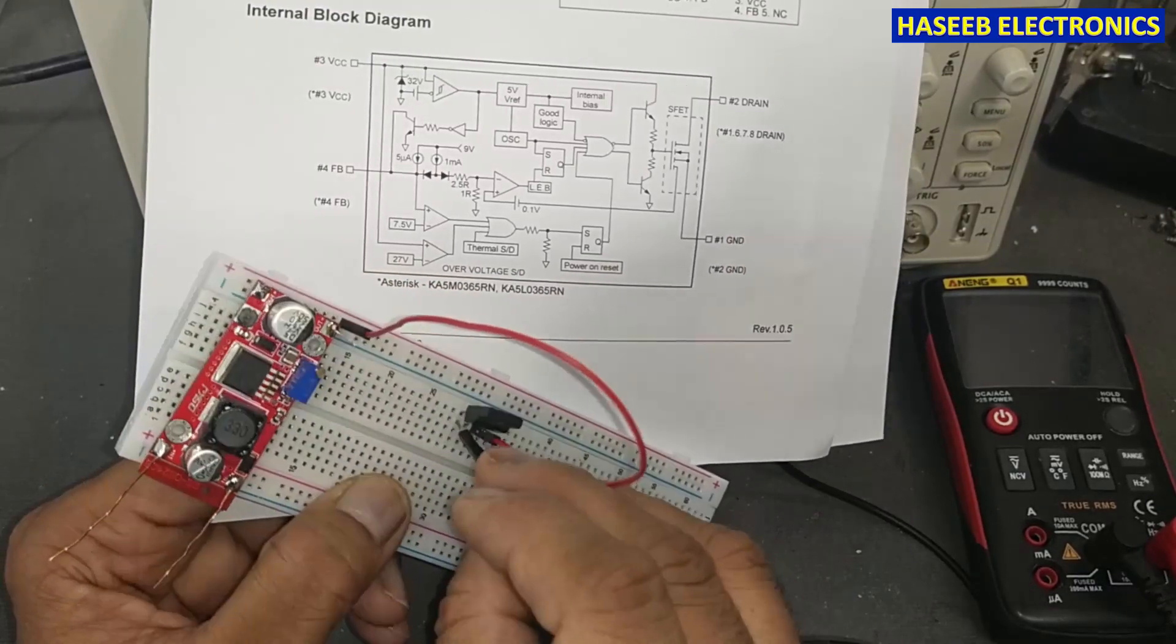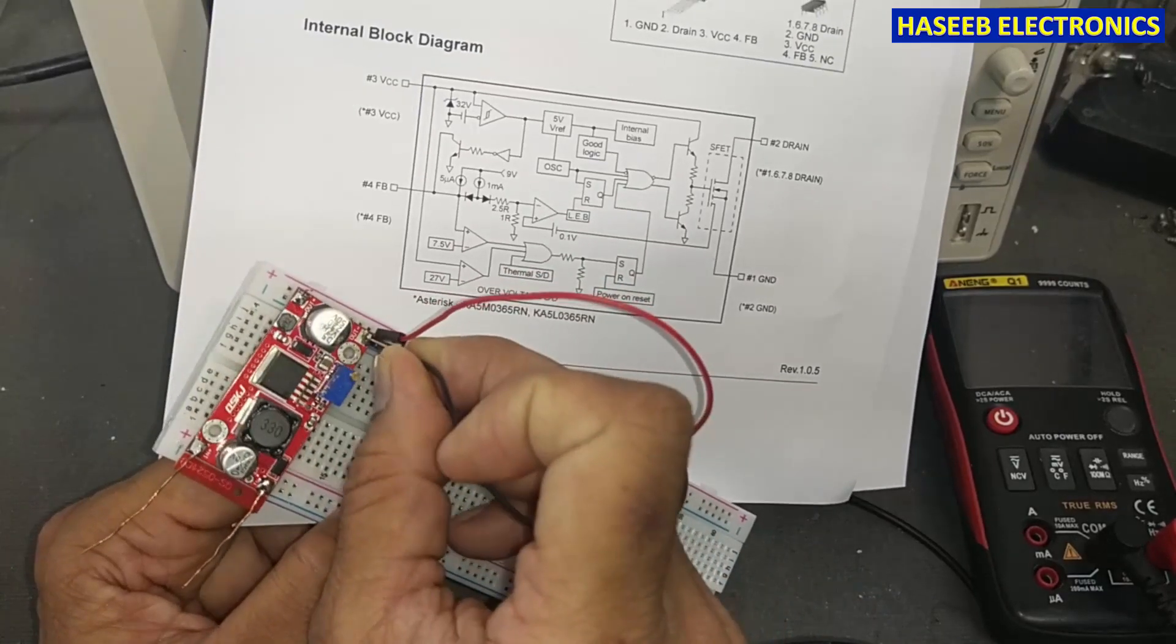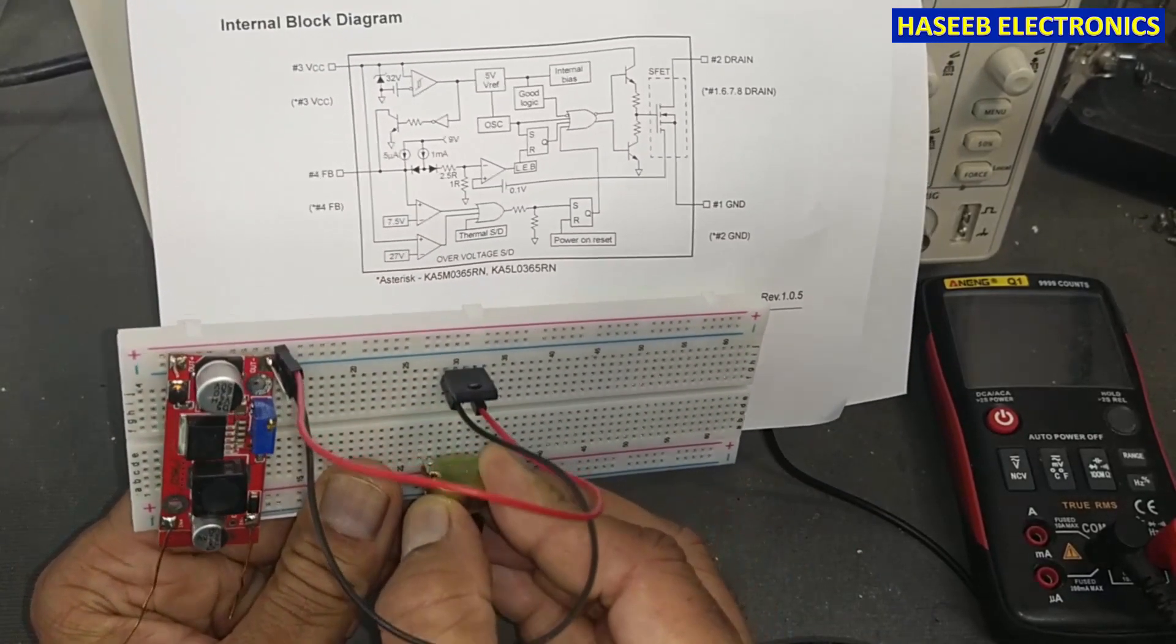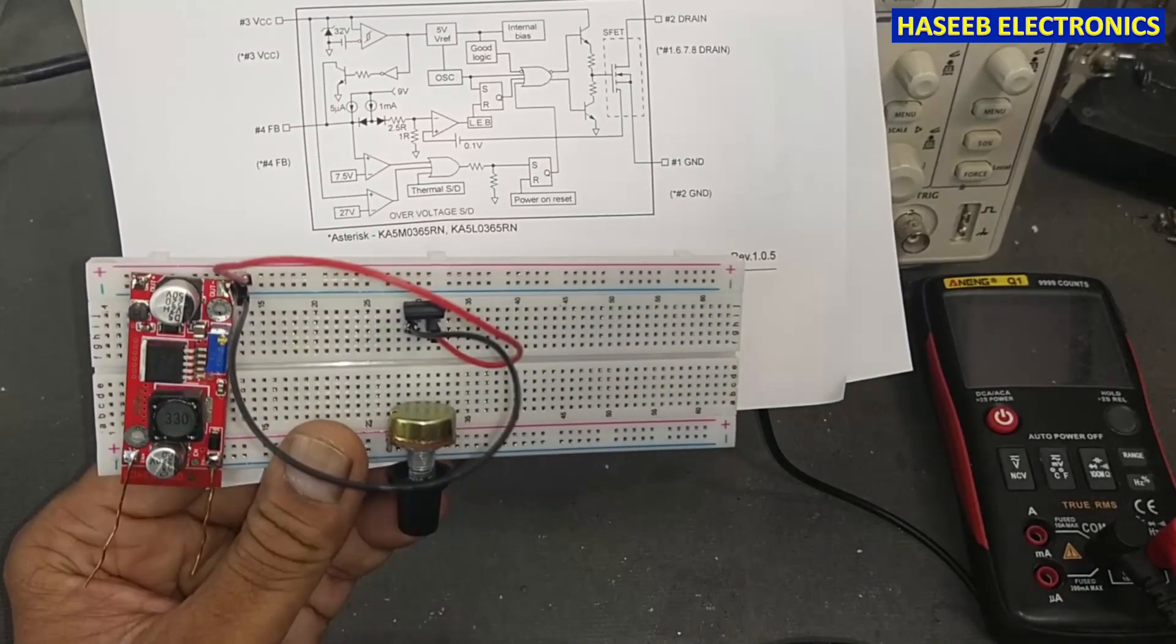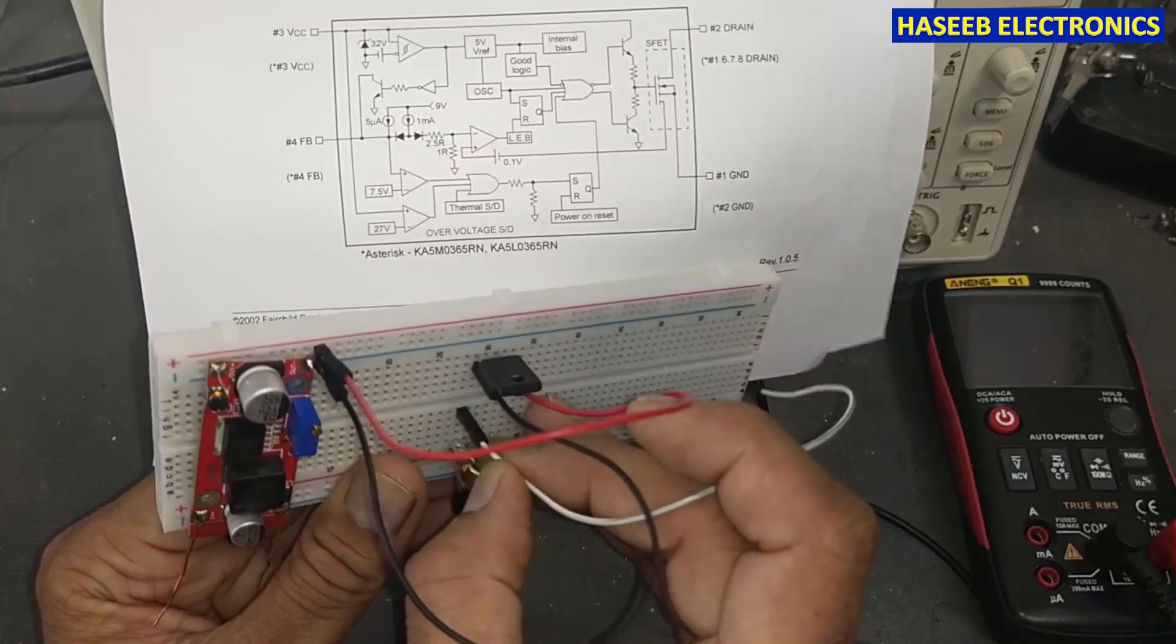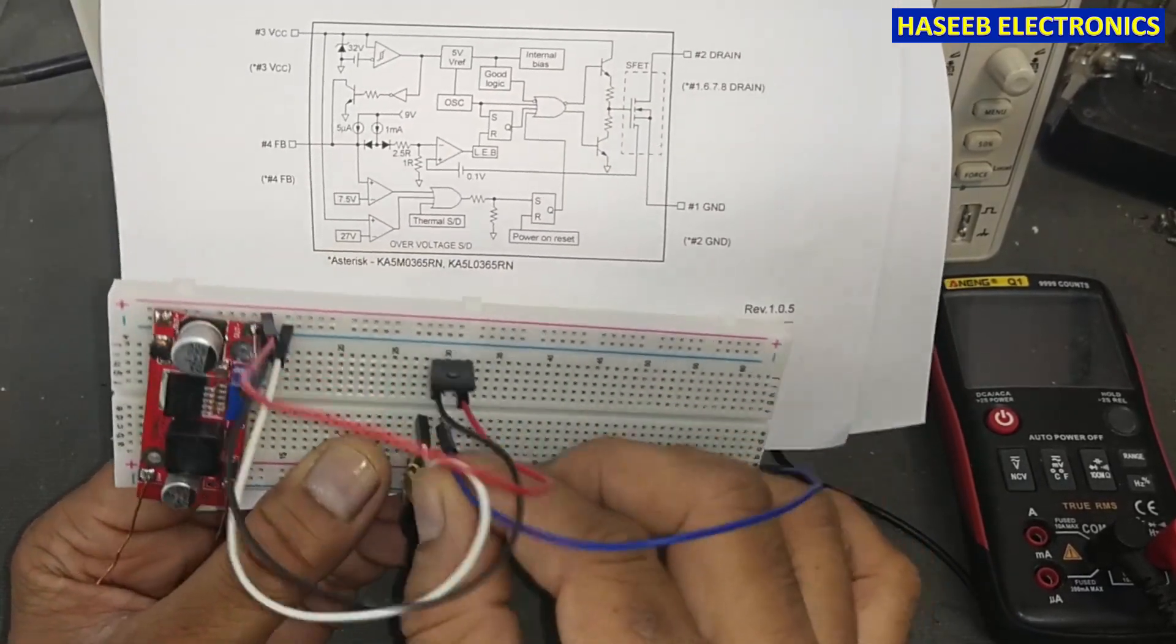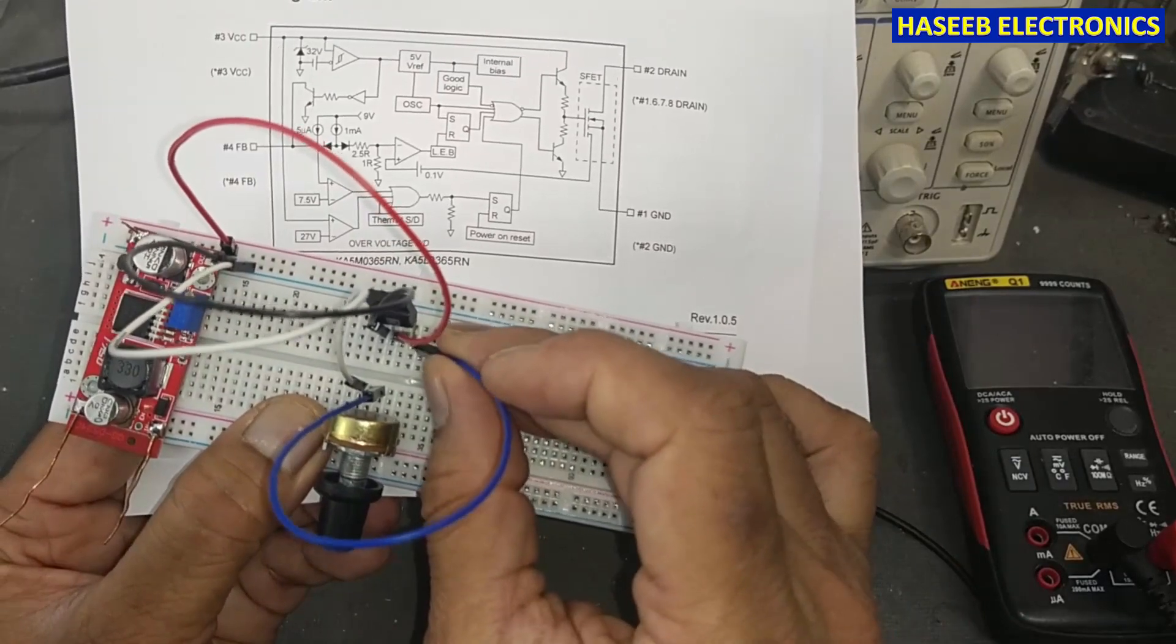We will apply this adjustable power supply to pin number 3. Pin number one we will connect to ground. Pin number one is connected to ground and we will use 10 kilo-ohm potentiometer. I will place it here to adjust the feedback. We are just going to verify the function of this IC. One end of the potentiometer I will connect to ground, and the center slider, that is wiper of the potentiometer, I will take output and connect to pin number 4.